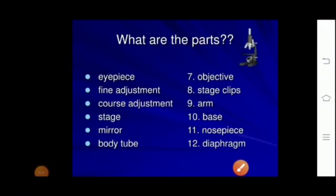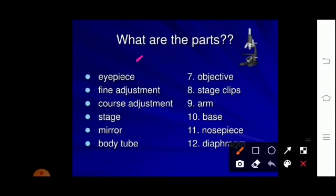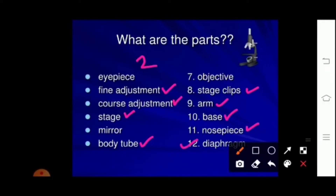Coming to the parts of the microscope, they are broadly classified into two basic categories: mechanical parts and optical parts. Mechanical parts consist of adjustments, stage, body tube, stage clip, arm, base, nose piece, and diaphragm. Optical parts consist of the eyepiece and objective — that means lens and mirror.